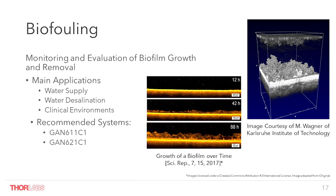For this application, our 900 nm Ganymede series systems have turned out to be a very powerful tool for imaging biofilms in situ within flow cells, or on some occasions even within a river. On our website you can find an application highlight for biofilm imaging, where we describe in far more detail what OCT is capable of delivering to this research community — the application sheet also outlines the most used system configurations including all necessary accessory items.